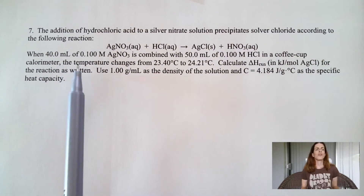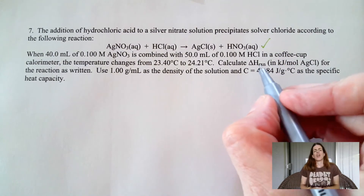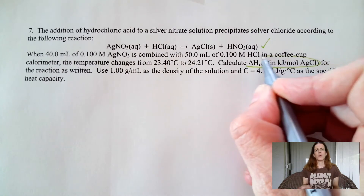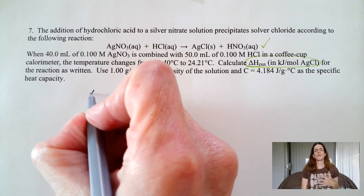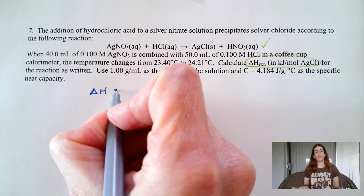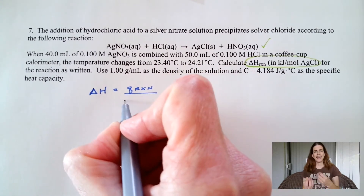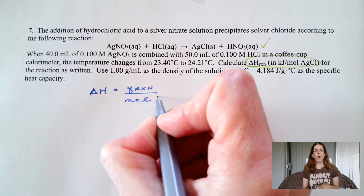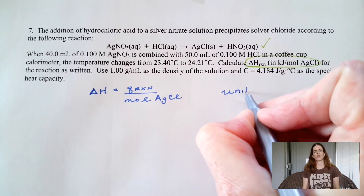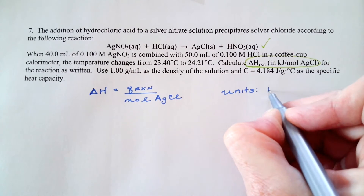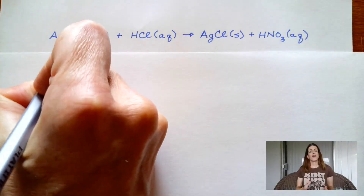In this problem, the first thing I notice is that we're given a double displacement reaction to work with, and it's balanced. Moving on, ultimately what do we want? We want to figure out the enthalpy associated with this double displacement precipitation reaction, and we have a formula for that: Delta H of the reaction equals Q of the reaction — that heat energy of the reaction — divided by moles. In this case, they were specific and told us to divide by the moles of silver chloride.